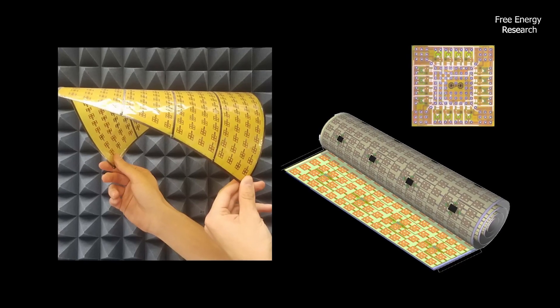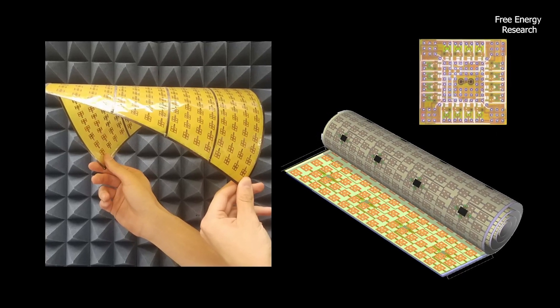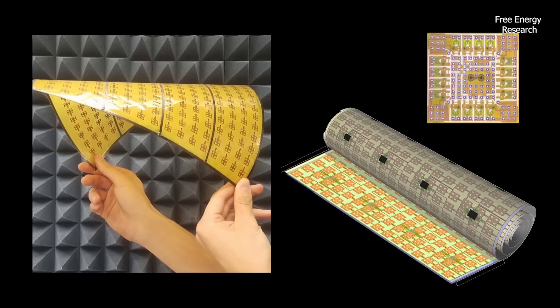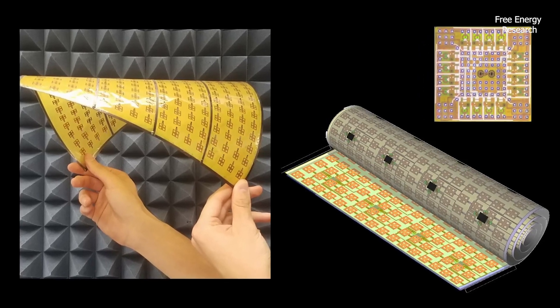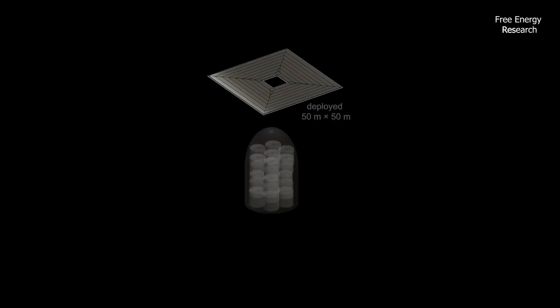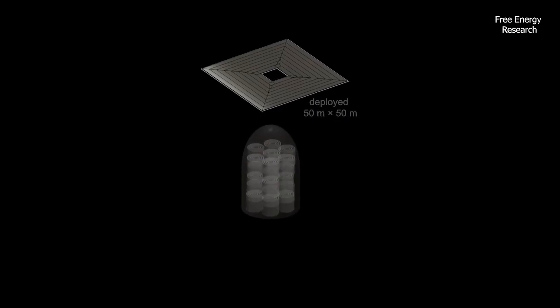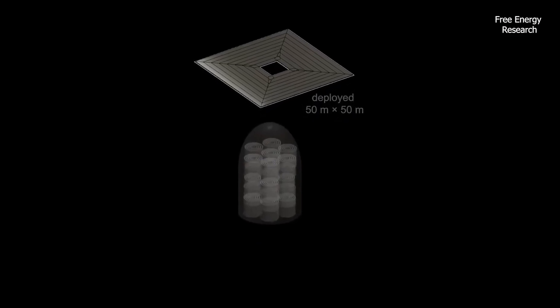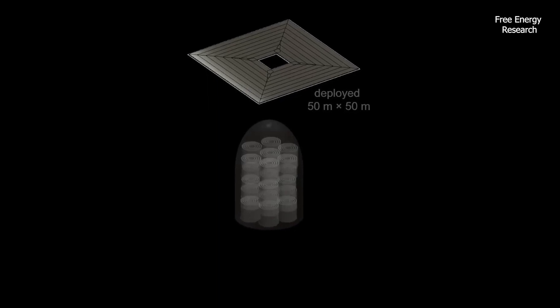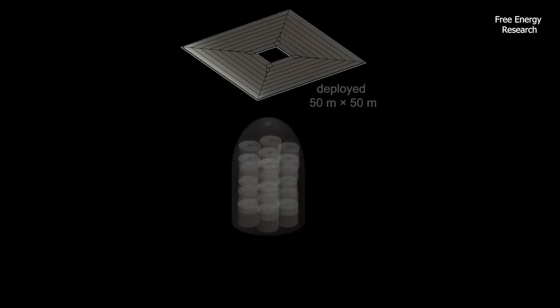MAPLE consists of an array of flexible, lightweight microwave power transmitters driven by electronic chips built using low-cost silicon. The team says they need to be flexible so they can fold up into a package that can be transported in a rocket and then unfold once in orbit, much like NASA's James Webb Space Telescope.